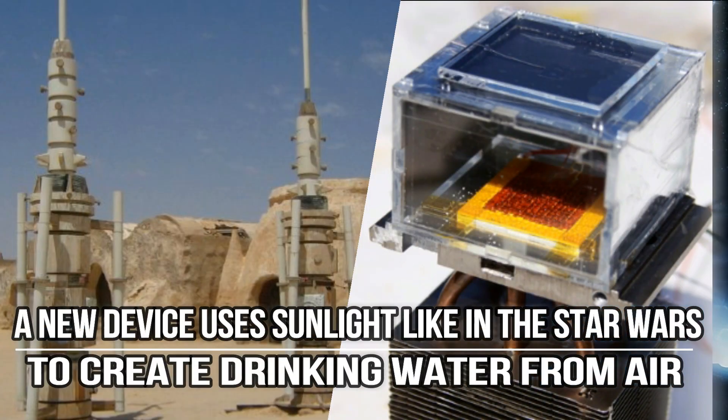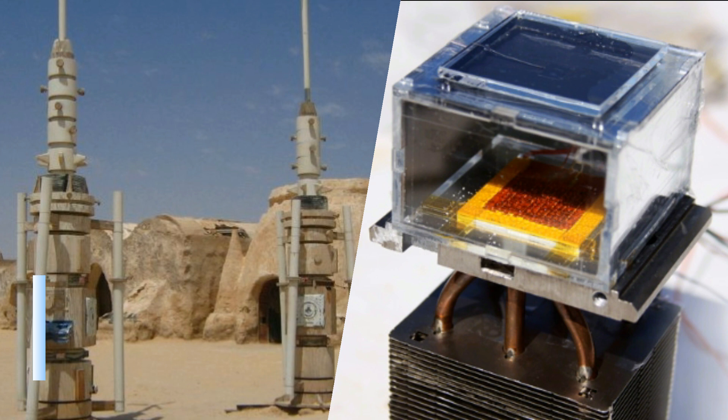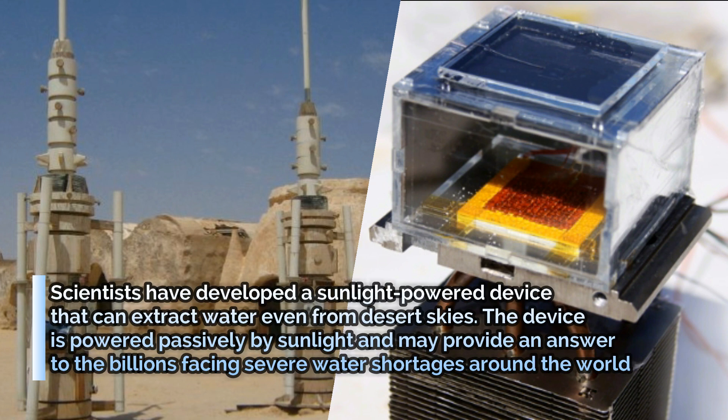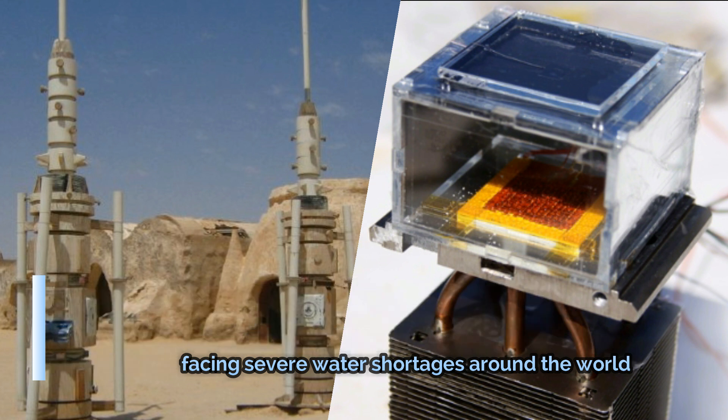A new device uses sunlight, like in Star Wars, to create drinking water from air. Scientists have developed a sunlight-powered device that can extract water even from desert skies. The device is powered passively by sunlight and may provide an answer to the billions facing severe water shortages around the world.